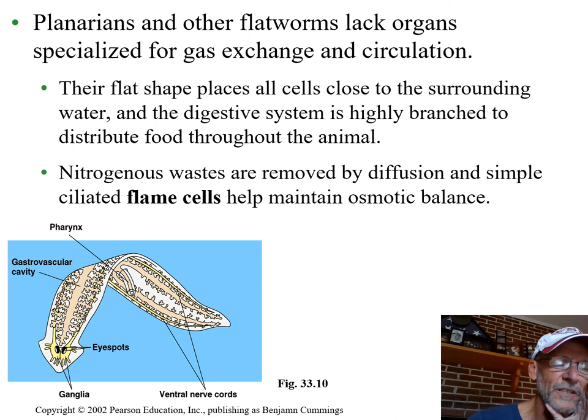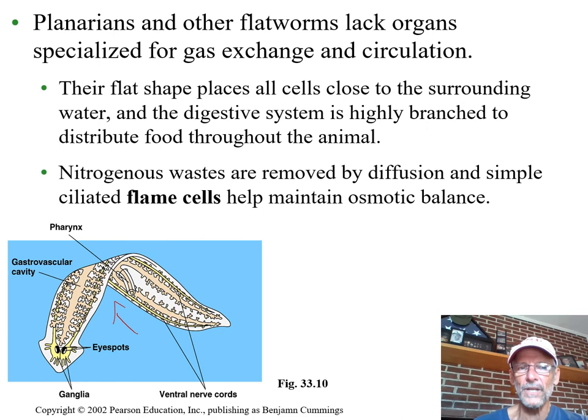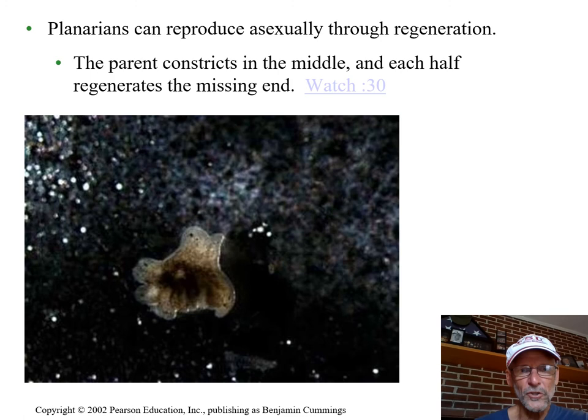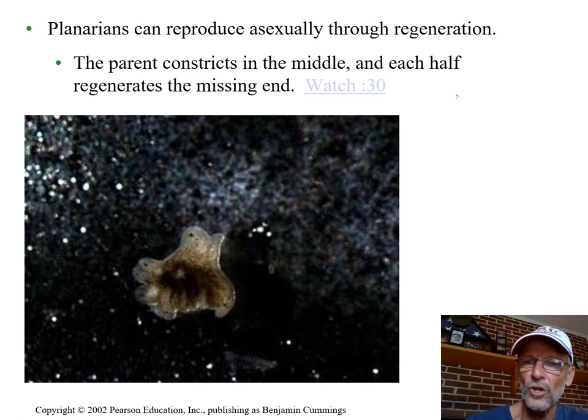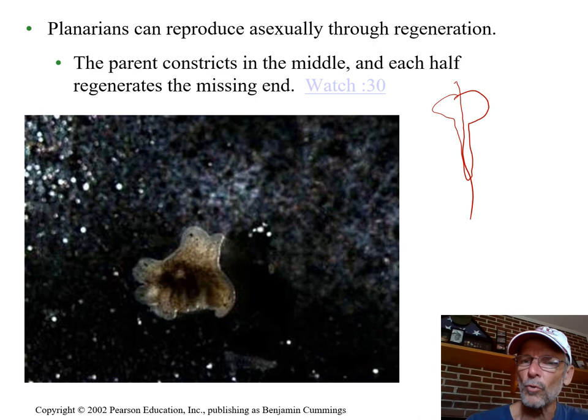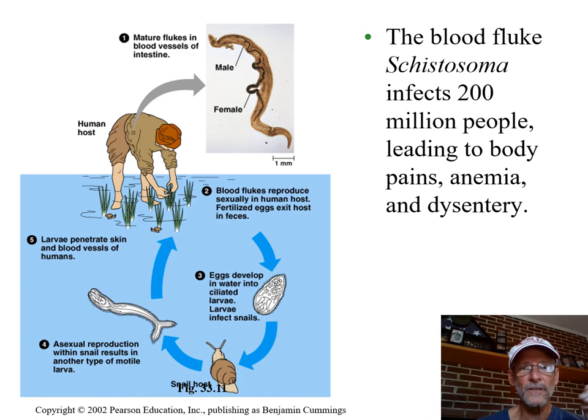Flatworms have lots of branching, which increases surface area — important for transport and circulation. They also have the ability to regenerate not only body parts but their entire organism. This is one way they can reproduce: if you cut one in half, each half will grow another half, and you'll end up with two of them.